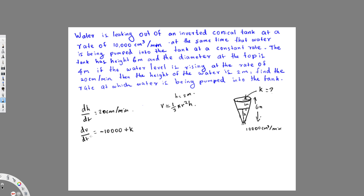Since we don't have dr/dt, we need to eliminate r from the formula. We can use similar triangles. The large triangle and the small triangle share the same angle. The big triangle has height 6 meters and the small triangle has height H.